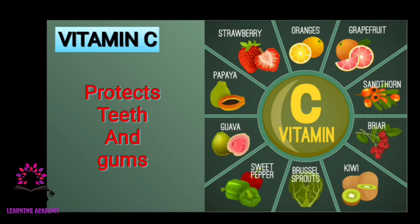Vitamin C is found in lemons, tomatoes, raw vegetables, gooseberries, apples, pineapples, and germinated grains. Vitamin C protects our teeth and gums.